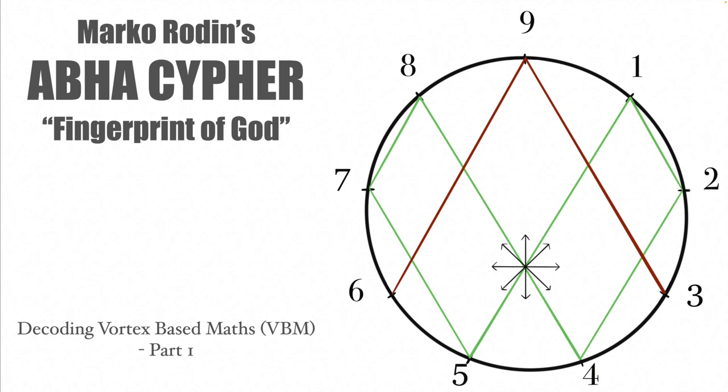This video is the first part of a multi-part series called Decoding Vortex Base Mathematics. In this first part we're going to be exclusively talking about Marco Rodin's Abha Cipher, variously called the fingerprint of God, and the fundamental key to Vortex base mathematics.